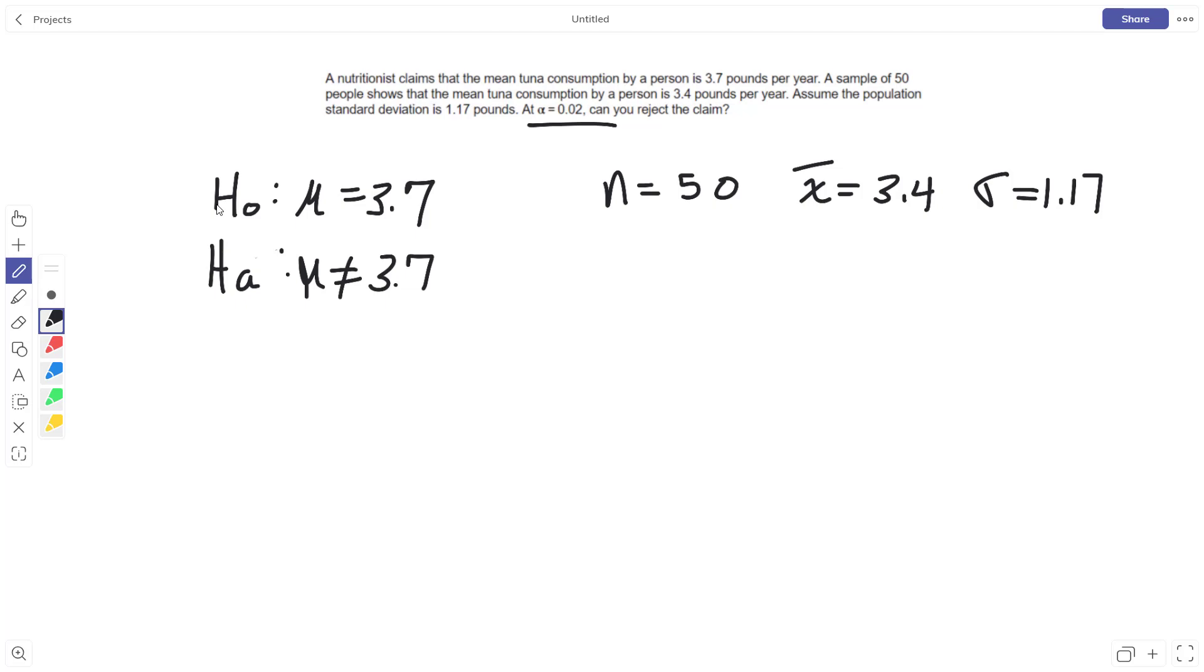All right, so let's draw a picture. What we're looking at is this nutritionist is saying that the mean is 3.7 pounds per year. We went out and we got a sample and it ended up right here. I don't know, is this too far away or what?